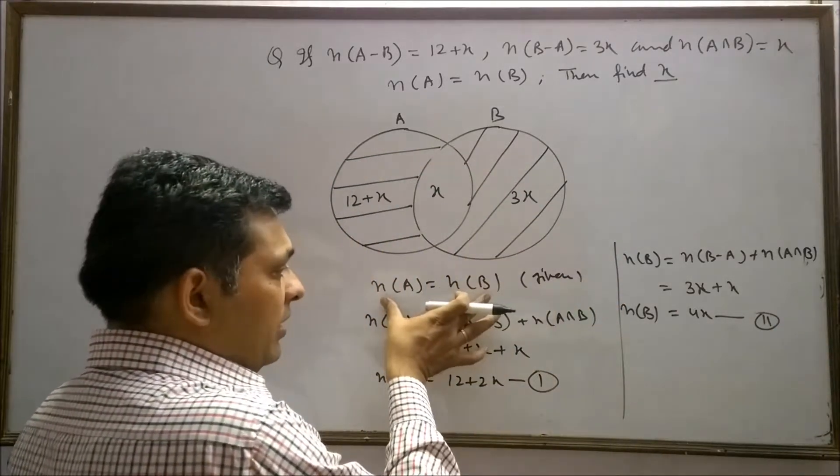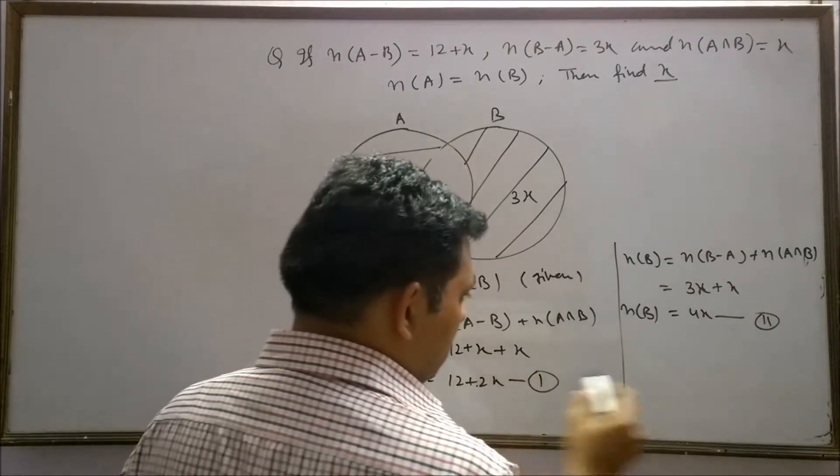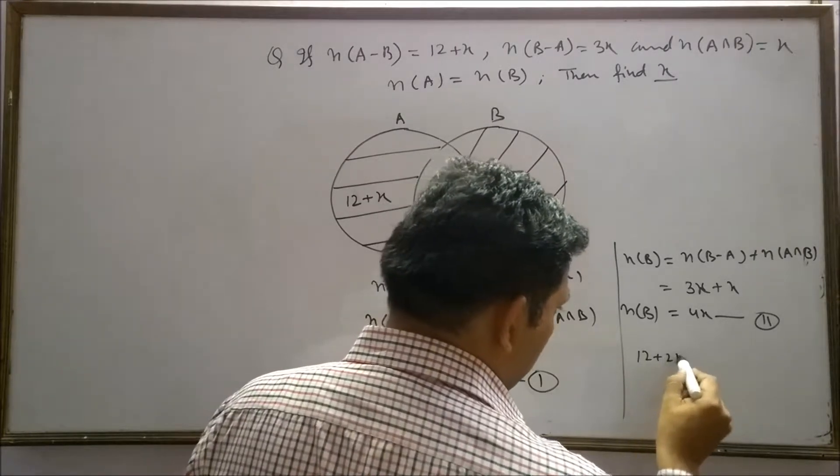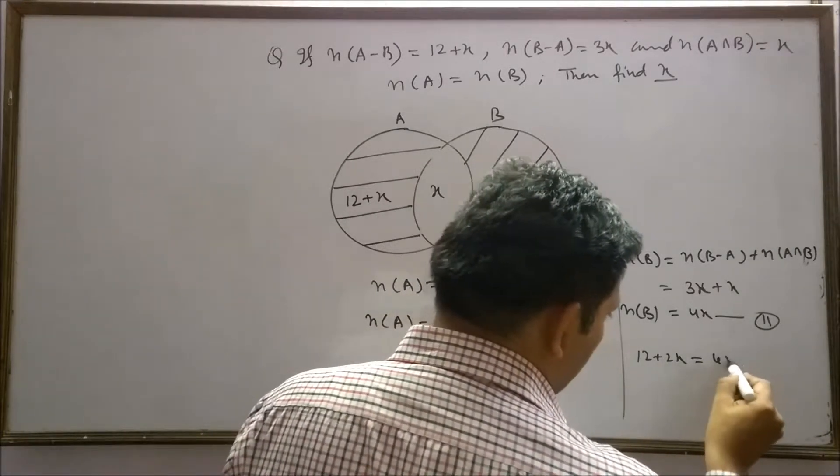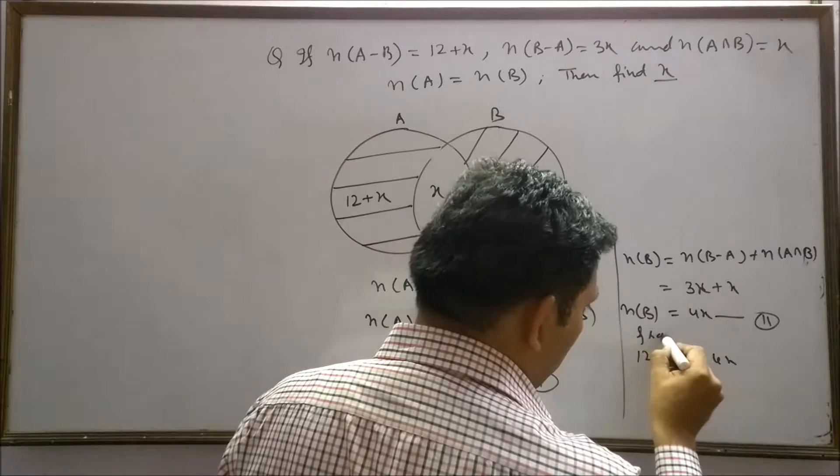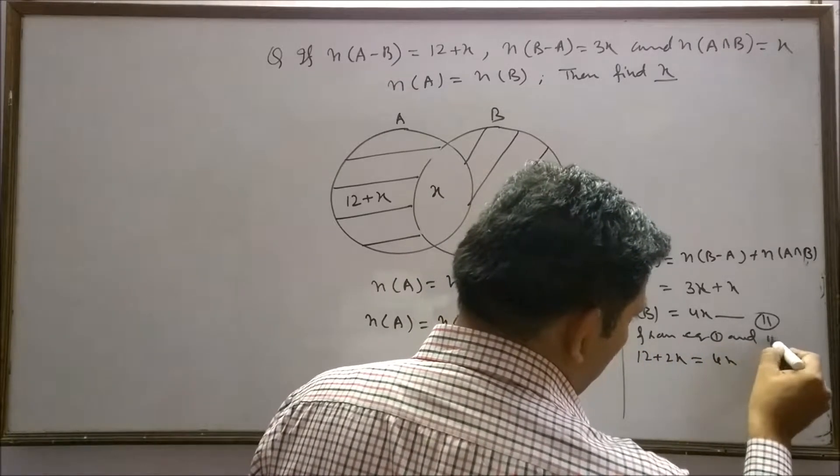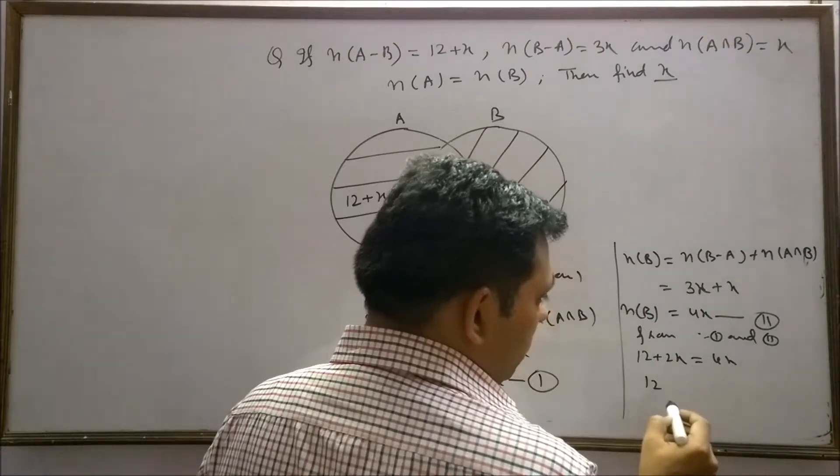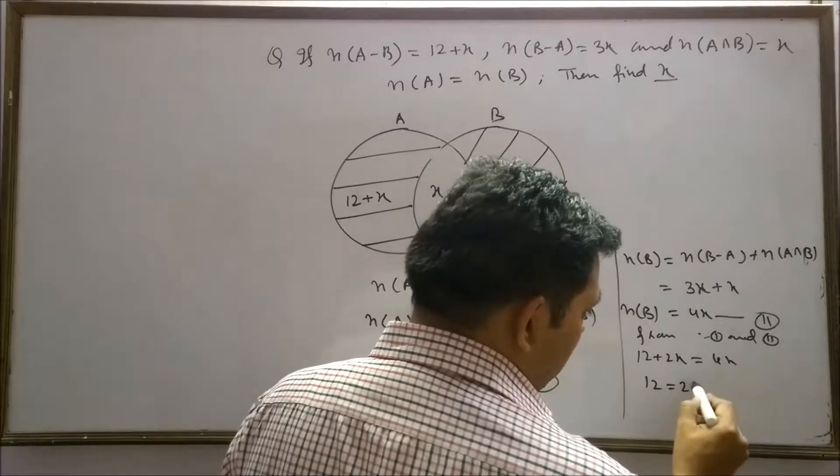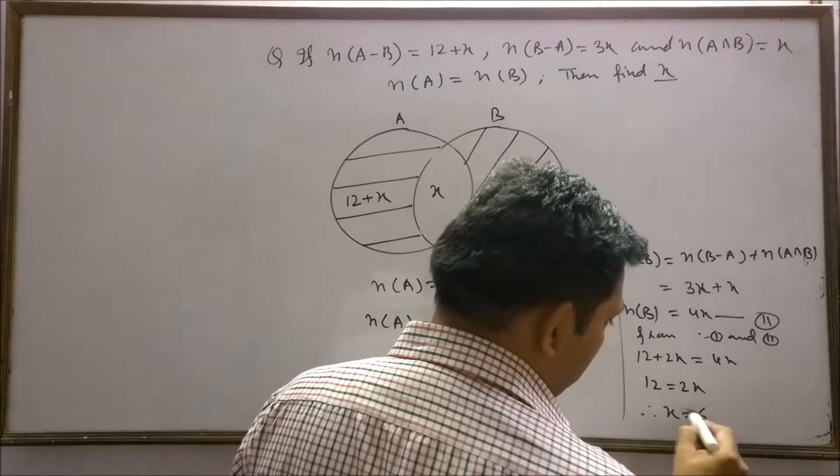It is given to us n(A) is equals to n(B). It means 12 plus 2x is equals to 4x. From equation 1 and 2, 12 is equals to 2x. Therefore, x is equals to 6.